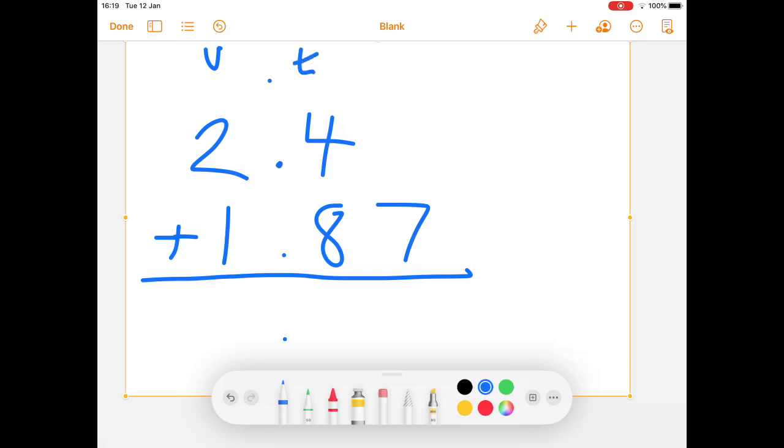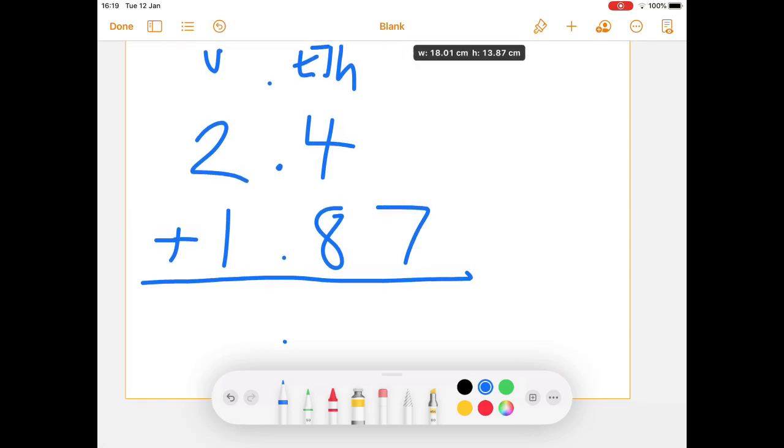And then you want to make sure that you've outlined your place value. So we've got units there, we've got tenths, and now we've got hundredths. And it's really helpful to put your place value in to keep you right while you are adding.